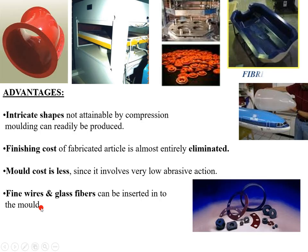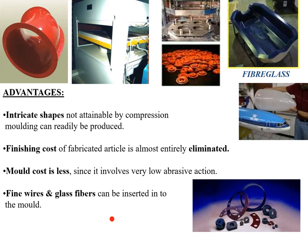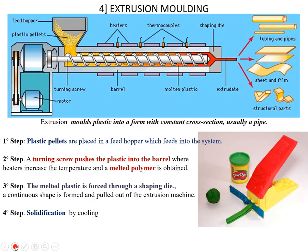These are some objects prepared by transfer molding. Intricate shapes which cannot be made by compression molding can be produced. Finishing cost is eliminated because you get a very good finished product. Mold cost is less. Fine wires and glass fibers can be inserted into this mold depending on what type of shape or plastic you are preparing.